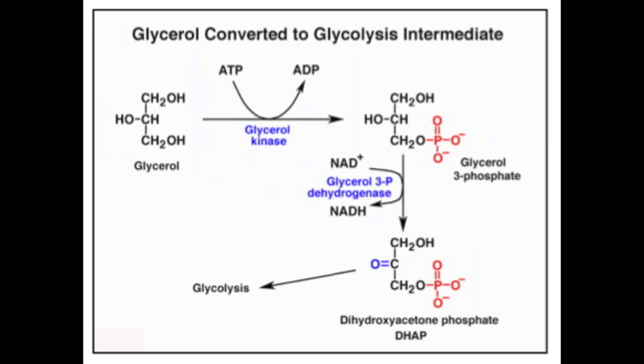In the second step, glycerol 3-phosphate dehydrogenase reduces one NAD plus to an NADH and oxidizes the hydroxyl group in glycerol 3 phosphate to create dihydroxyacetone phosphate.